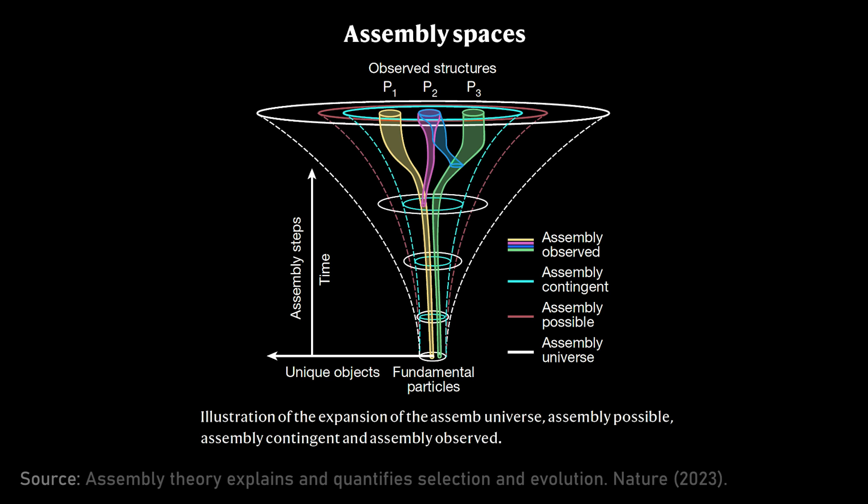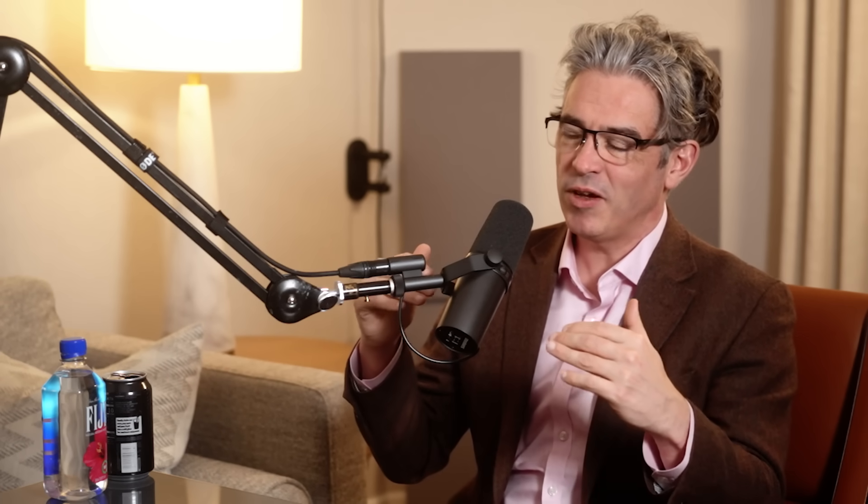Assembly universe: everything goes. Assembly possible: laws of physics come in — in chemistry, bonds in assembly — so those are actually constraints, the constraints of the base. In computer science terms, the assembly universe is like no laws of physics, things can fly through mountains beyond the speed of light. In the assembly possible, you apply the laws of physics but you can get access to all the motifs instantaneously with no effort, so you could make anything.